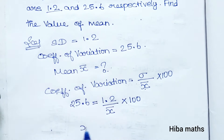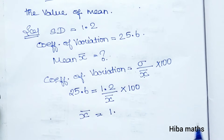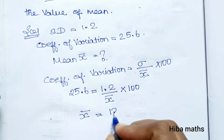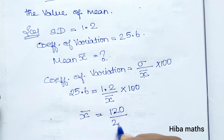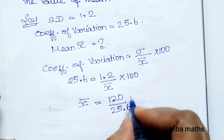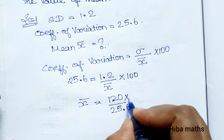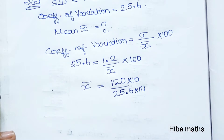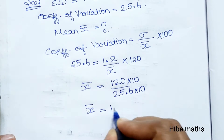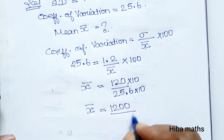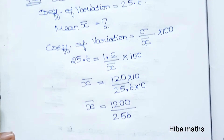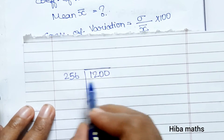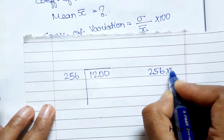Rearranging the equation to solve for x-bar: x-bar is equal to 1.2 divided by 25.6, multiplied by 100.